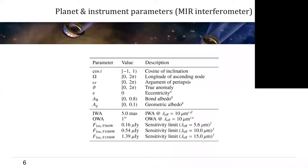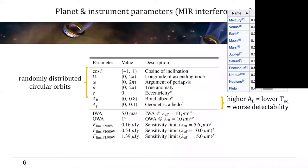So in our baseline scenario, we assume randomly distributed circular orbits for our planet population, and considering the bond albedos of the solar system planets, we distribute them between 0 and 0.8 for our simulated exoplanet population. The geometric albedos are chosen rather small, but for the mid-infrared interferometer, they don't really matter because we are looking at the thermal emission for our planets and not the reflected host star light.